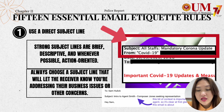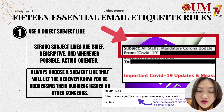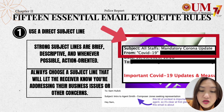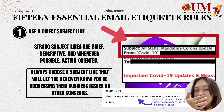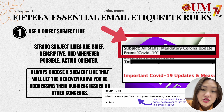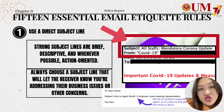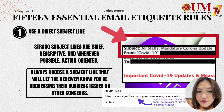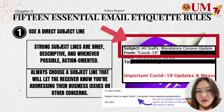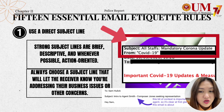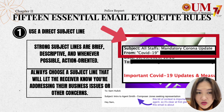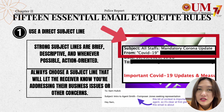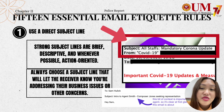The first rule is you need to use a direct subject line. As shown in the example, a subject line like 'All Staffs Mandatory Corona Update' is brief, descriptive, and action-oriented. You have to choose a subject line that lets the receiver know you're addressing their business issues or concerns. A clear subject line often determines whether people will open your email.